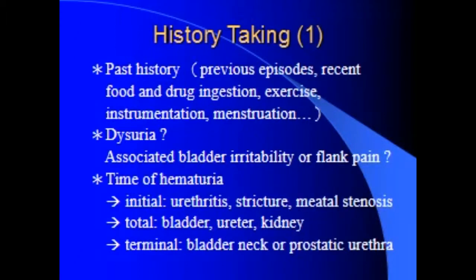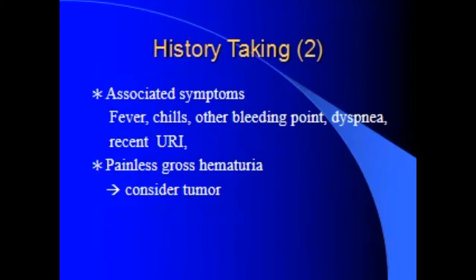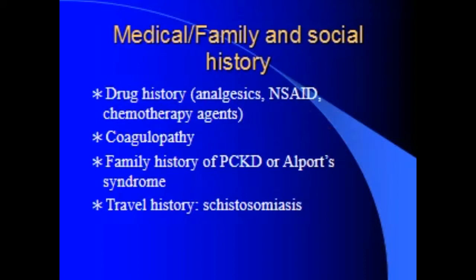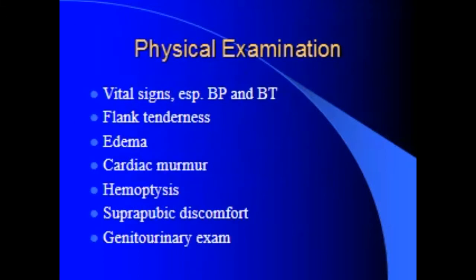Most common causes of hematuria by age and sex: Ages 0–20: congenital urinary tract anomalies with obstruction. Ages 20–40 male: UTI, stones, bladder tumor. Ages 40–60 female: bladder tumor, stones. Age 60+ male: BPH, bladder tumor. Age 60+ female: bladder tumor, UTI.